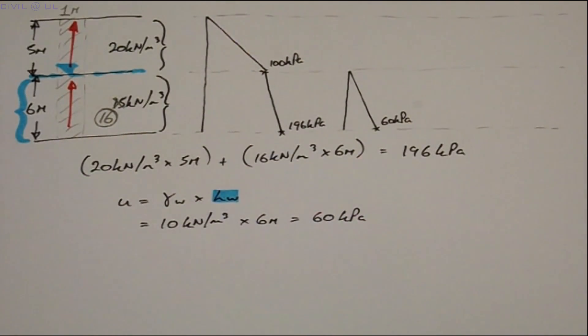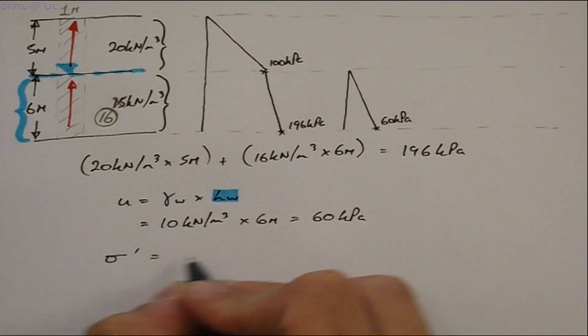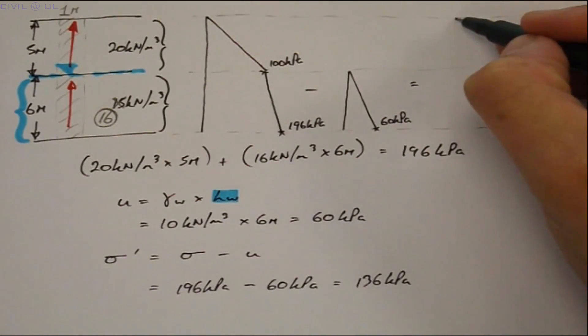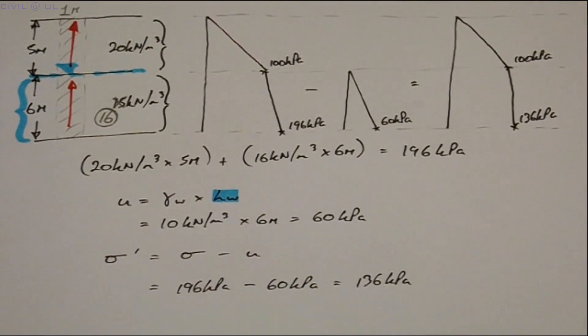We now have our total stress and pore water pressure and subtracting these we get an effective stress of 136 kPa. The resulting effective stress profile looks like this. Very good.